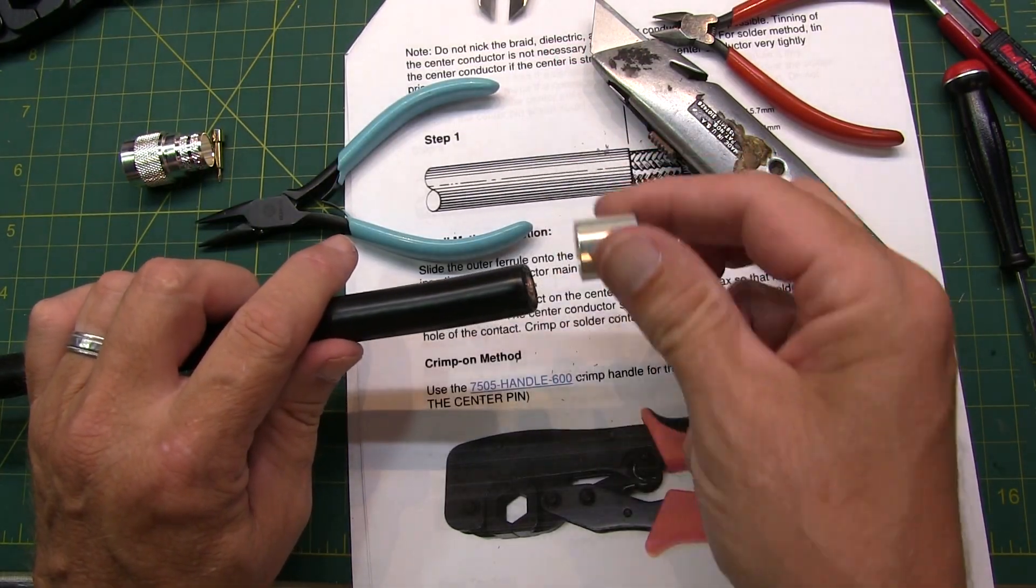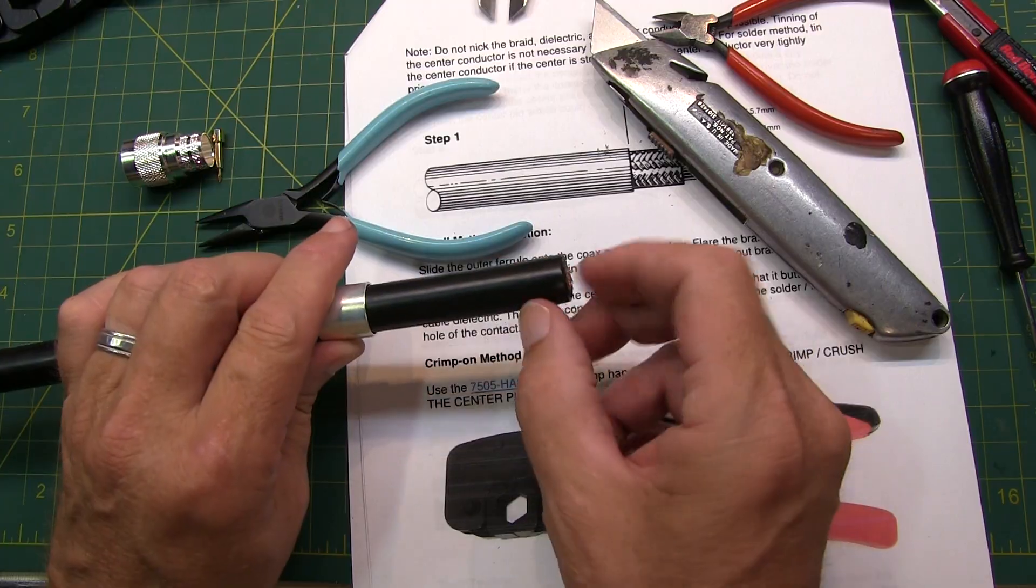Of course, you want to remember to slip the ferrule on the end of the coax before you start cutting and trimming.